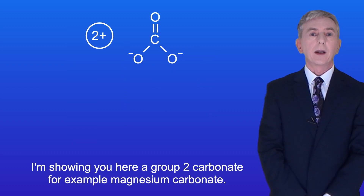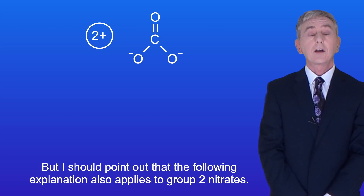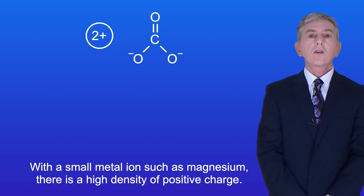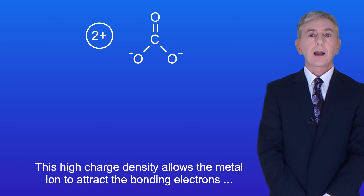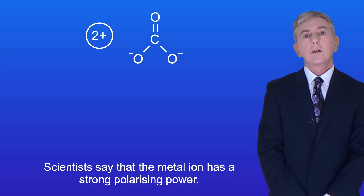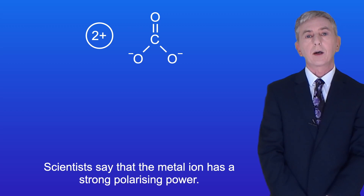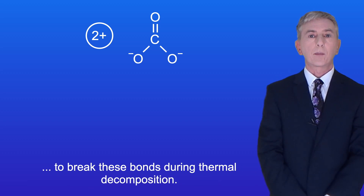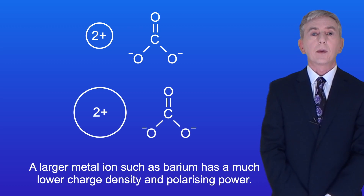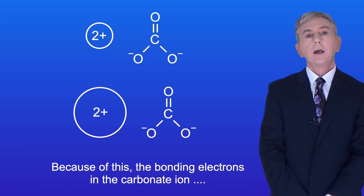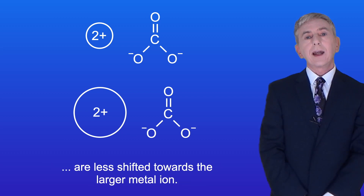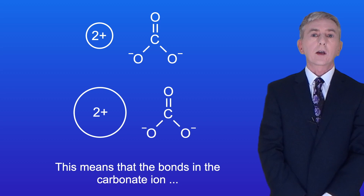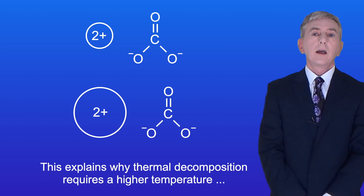Here is a group 2 carbonate, for example magnesium carbonate, but this explanation also applies to group 2 nitrates. With a small metal ion such as magnesium, there's a high density of positive charge. This high charge density allows the metal ion to attract the bonding electrons in the carbonate ion — scientists say that the metal ion has a strong polarizing power. Because the bonding electrons are already partially shifted, it takes relatively little energy to break these bonds during thermal decomposition. A larger metal ion such as barium has a much lower charge density and polarizing power, so the bonding electrons in the carbonate ion are less shifted towards the larger metal ion. This means the bonds require a higher temperature to break, which explains why thermal decomposition requires a higher temperature as we move down group 2.